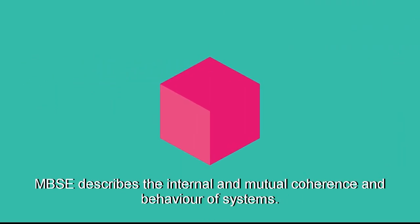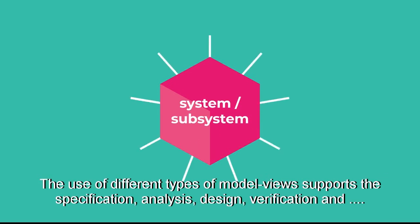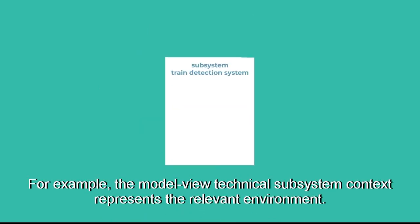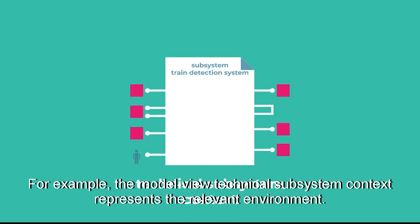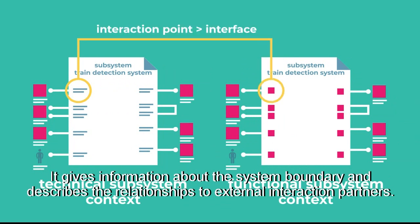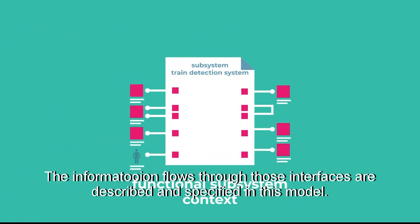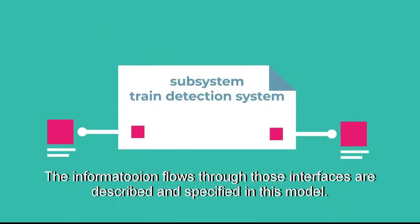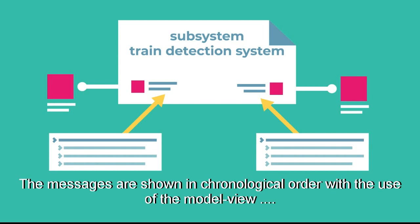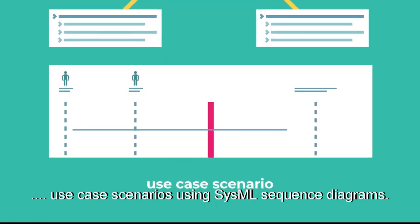Model-based system engineering describes the internal and mutual coherence and behaviour of systems. The use of different types of model views supports the specification, analysis, design, verification and validation of the interface standard. For example, the model view technical subsystem context represents the relevant environment. It gives information about the system boundary and describes the relationships to external interaction partners. The information flows through those interfaces are described and specified in this model. For example, a train detection section can be free or occupied by a train. The messages are shown in chronological order with the use of the model view use case scenarios using SysML sequence diagrams.